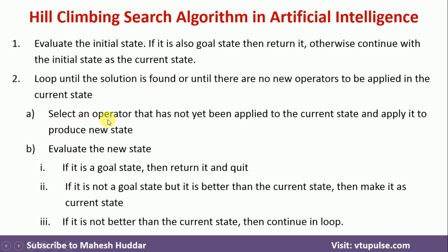We perform steps A and B continuously unless and until one of these conditions is satisfied. We select an operator so that we can go from the current state to the next state. Once we go to the next state, we need to evaluate it. If this new state is a goal state, we return it and say that the algorithm has successfully reached the goal state. If it is not a goal state but it is better than the current state, this new state will be made the current state. If this new state is not better than the current state, we consider the current state itself and continue the loop, identifying one more new state and applying the same process. This is how the Hill Climbing search algorithm works.